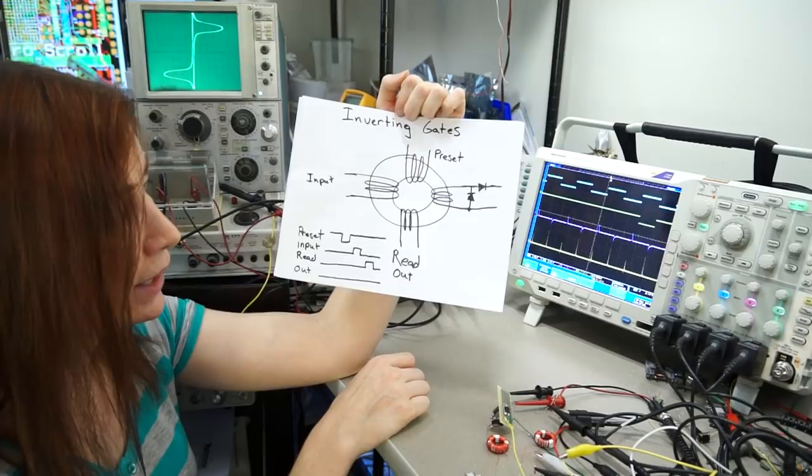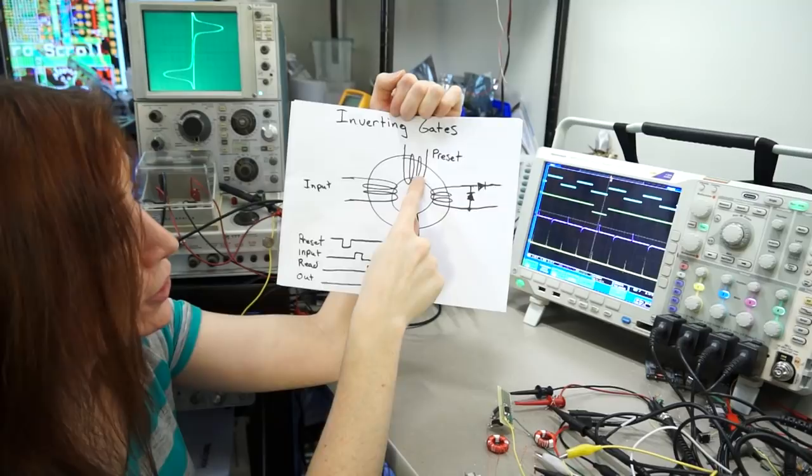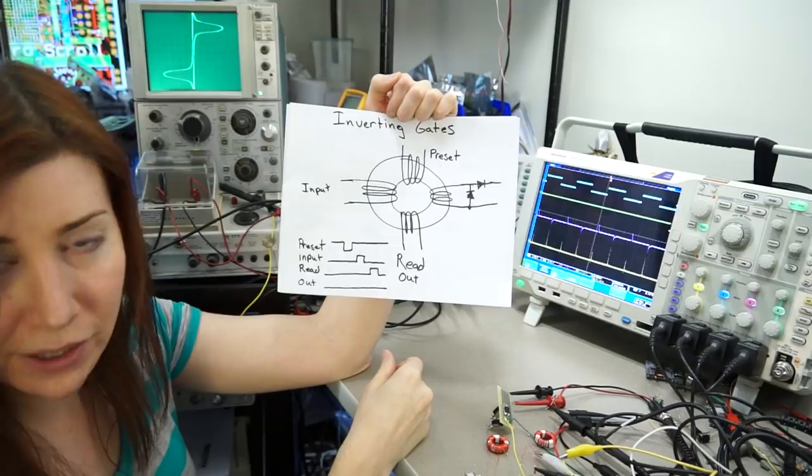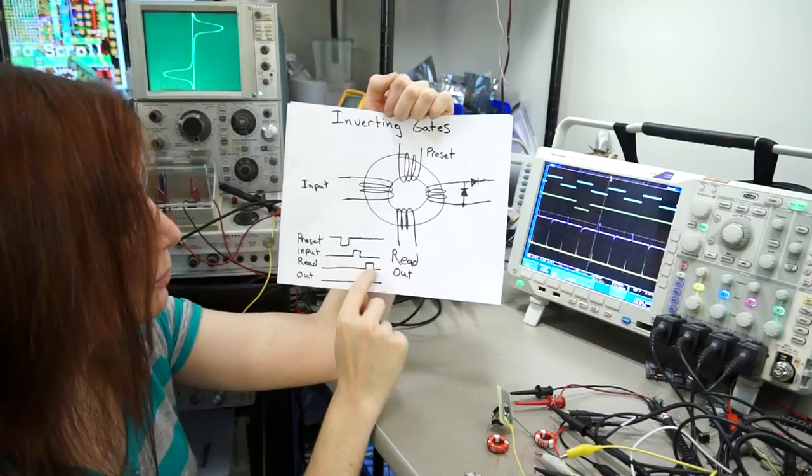Alright, for inverting gates, it gets a little bit more tricky. You can have a biasing coil up here, or you can do a preset pulse. The easier one to understand is a preset pulse. So, in time, first you preset your gate, so you set the magnetization in one direction. And then your input, if it comes along and pulses, it would reset that back to a state that would not give an output. And then your readout pulse would evaluate the gate.